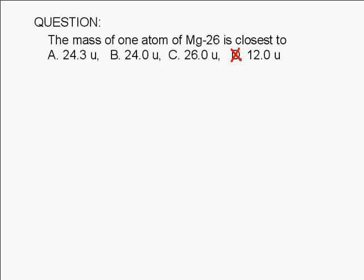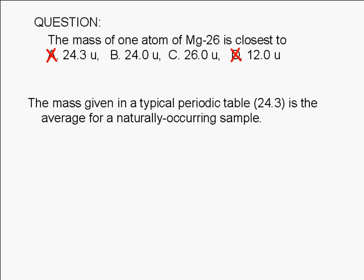Choice A is also wrong. The mass given in a typical periodic table, 24.3, is the average for a naturally occurring sample. The actual mass of an atom in atomic mass units is very, very close to its mass number. So, the correct answer is choice C. The mass of an atom of magnesium-26 is very close to 26.